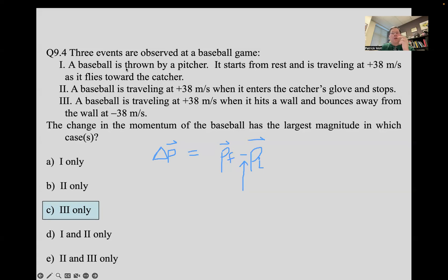Okay. And that's a general observation as we get into collisions and thinking about collisions, when an object bounces, the change of momentum is greater than if it sticks. So just sticking is this case of going from 38 meters per second to zero and it sticks in the glove.